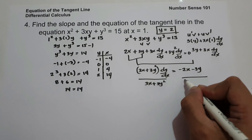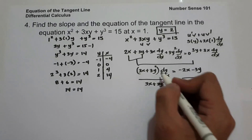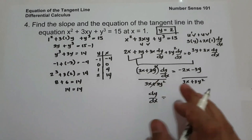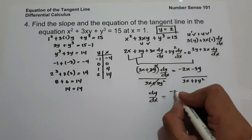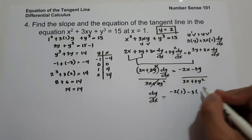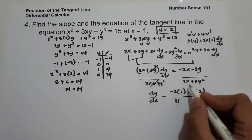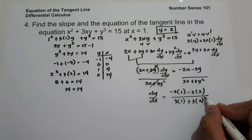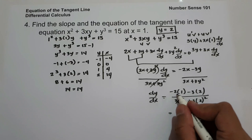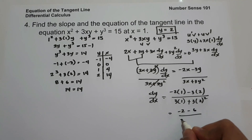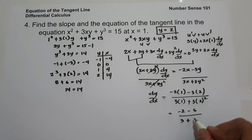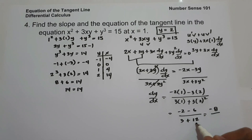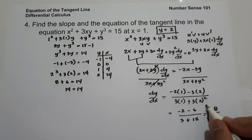Dividing both sides by (3x plus 3y²) gives dy/dx equals (negative 2x minus 3y) over (3x plus 3y²). Substituting x = 1 and y = 2: numerator is negative 2 times 1 minus 3 times 2, which is negative 2 minus 6, giving negative 8. Denominator is 3 times 1 plus 3 times 2 squared, which is 3 plus 12, giving 15. So the slope is negative 8 over 15.